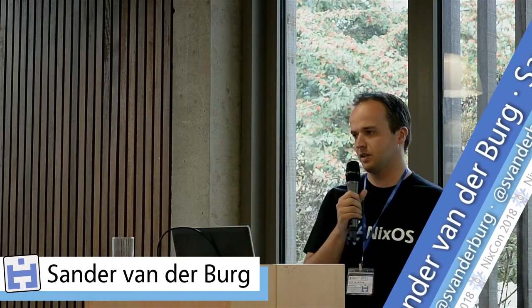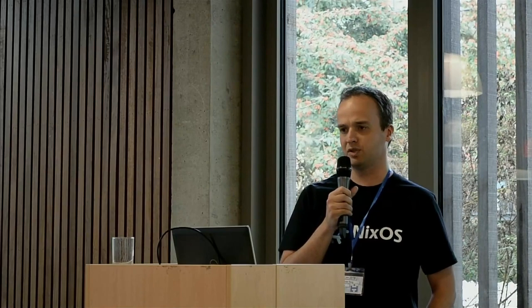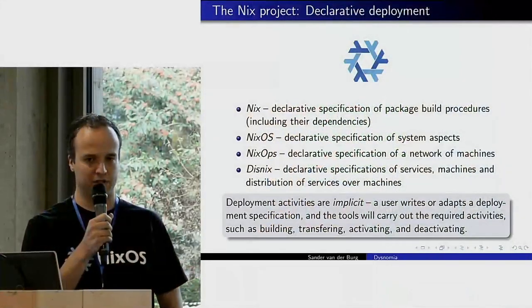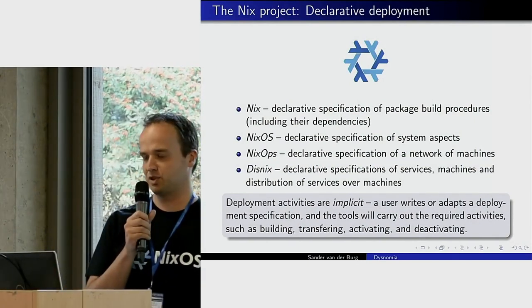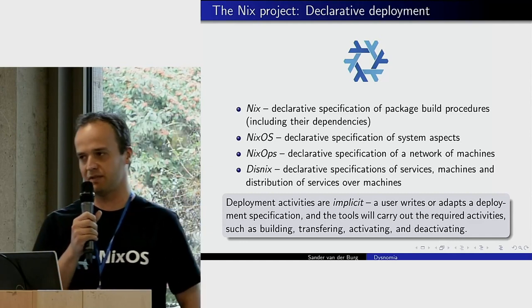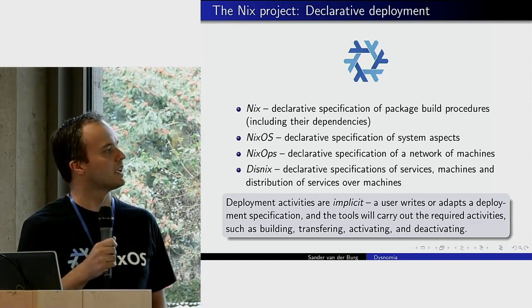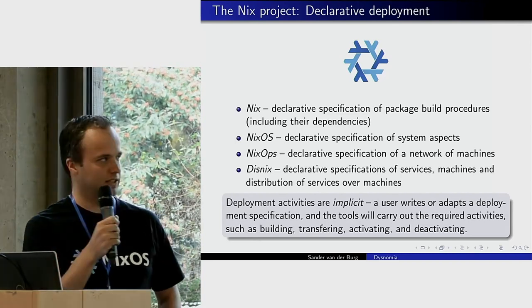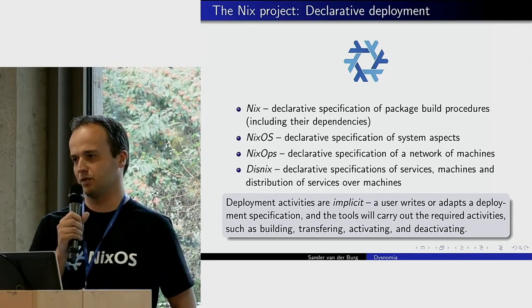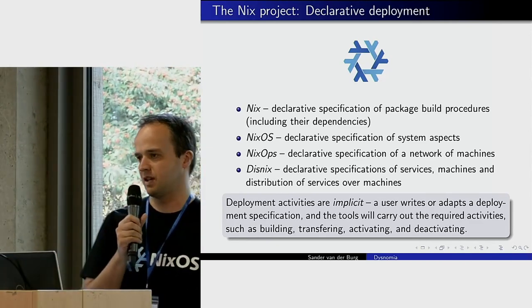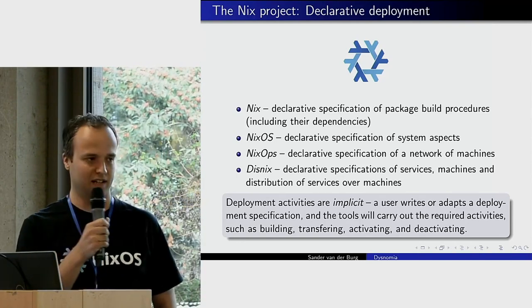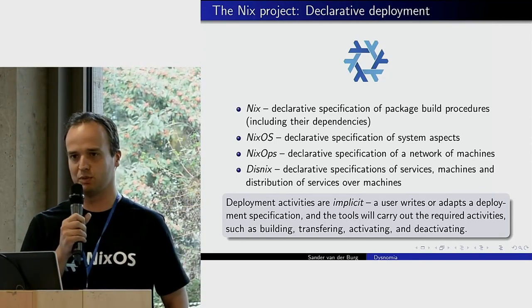You see that in all the tools in the project. With the Nix package manager, you provide a build recipe of the package you want to build and specify its dependencies, but you don't need to specify the build order — Nix is clever enough to figure that out. In NixOS, you provide a declarative specification of your system — what services to run, what end-user packages you want — and with a single command line instruction, all deployment activities are carried out.